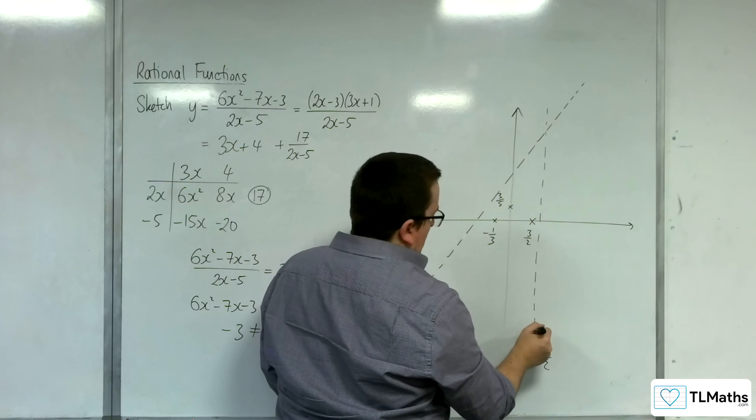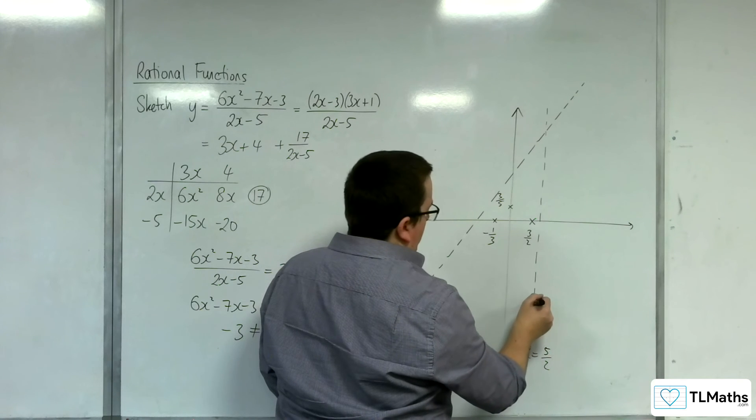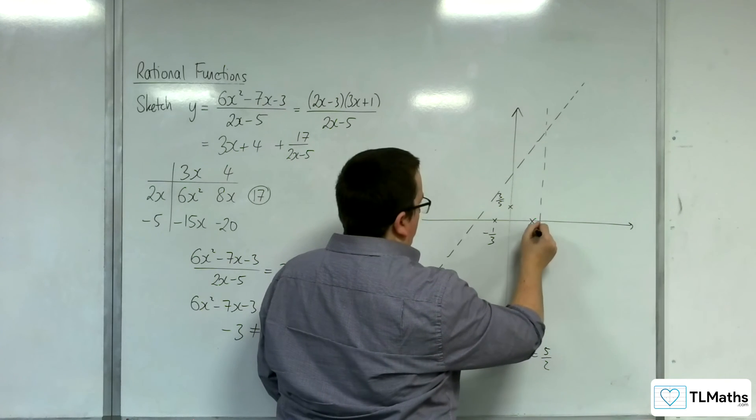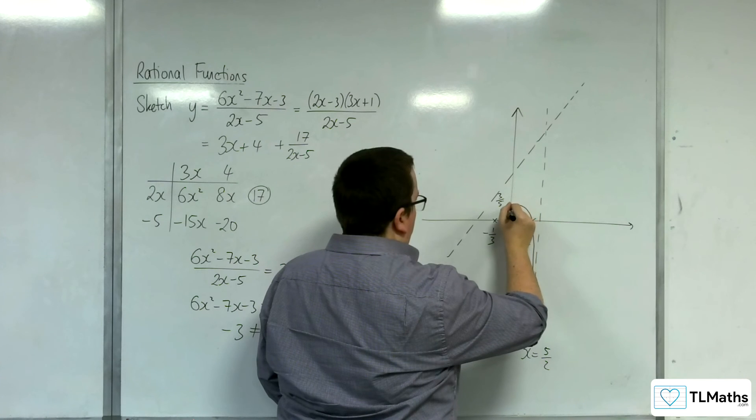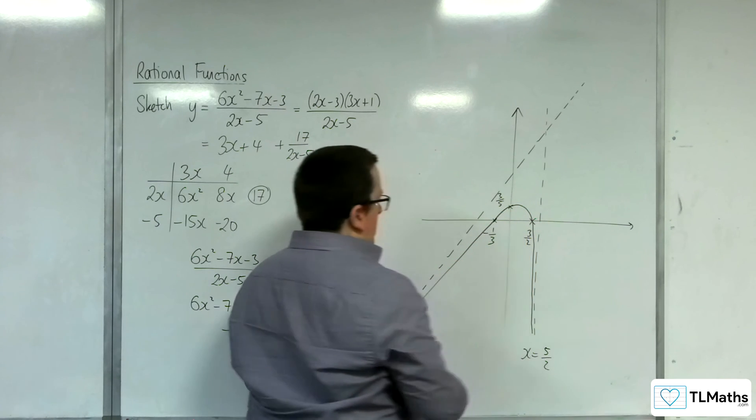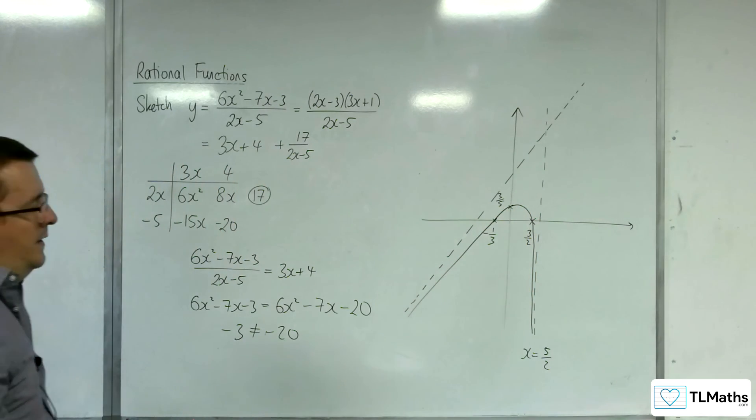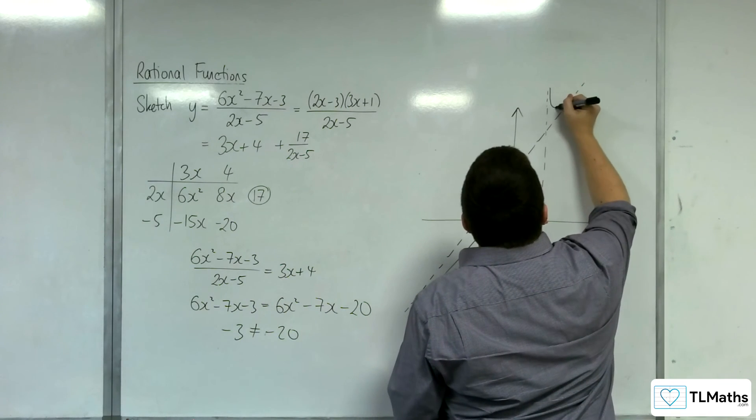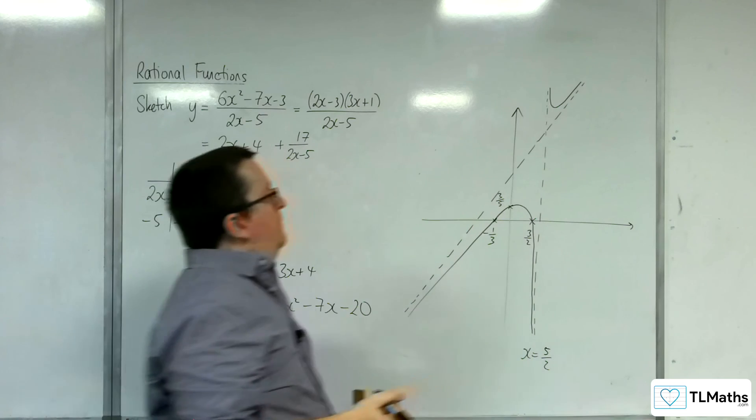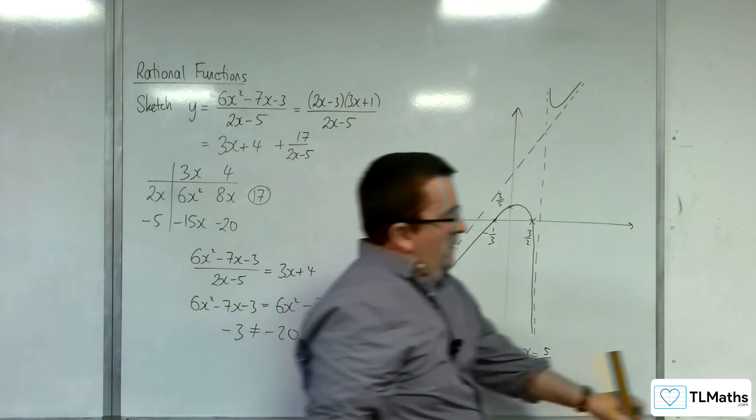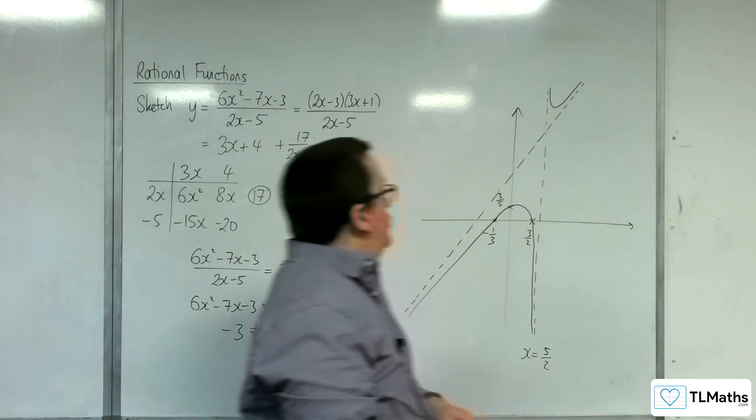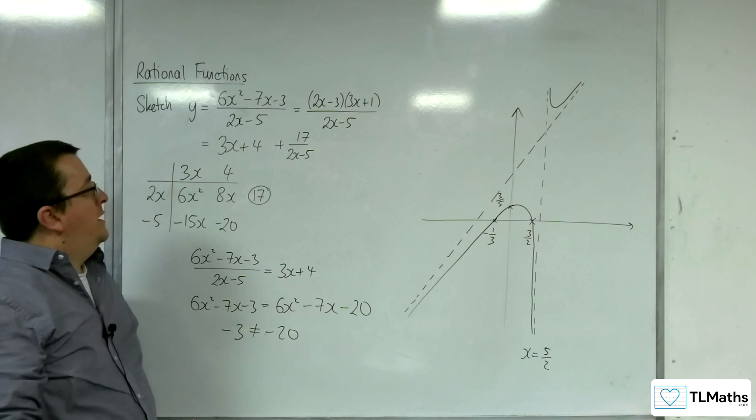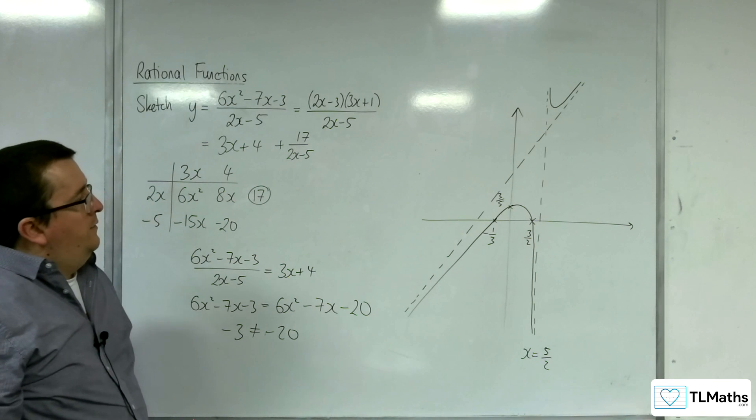So our curve must do something like this, and then tend towards the oblique asymptote. And up here, it must do something like that. And so that is a sketch of the curve y = (6x² - 7x - 3)/(2x - 5).